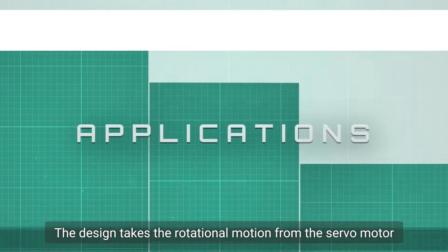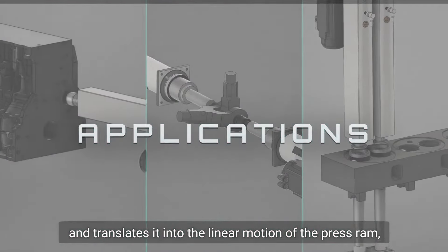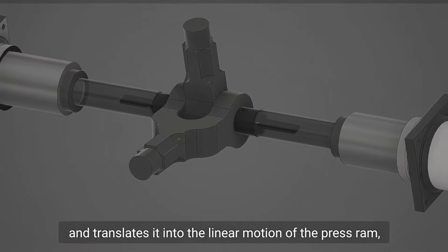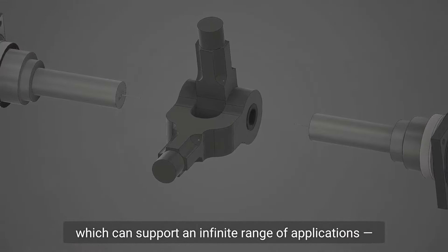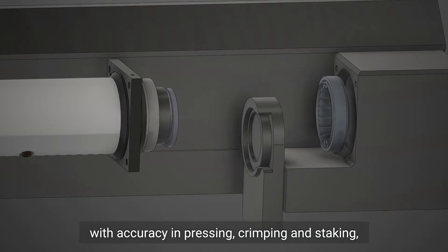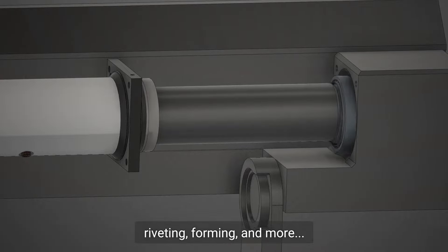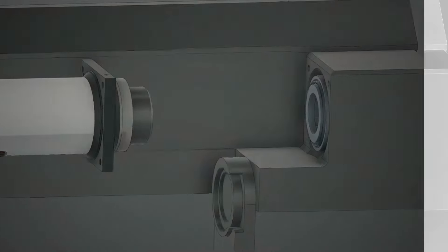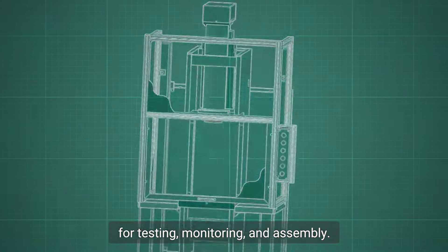The design takes the rotational motion from the servo motor and translates it into the linear motion of the press ram. It allows it to support an infinite range of applications with accuracy in pressing, crimping, staking, riveting, forming, and more for testing, monitoring, and assembly.